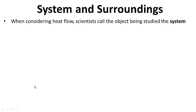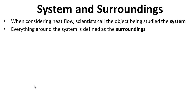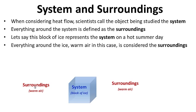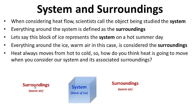System and surroundings. When considering heat flow, scientists call the object being studied the system, and everything around the system is defined as the surroundings. Let's say a block of ice represents the system on a hot summer day. Everything around the ice — the warm air — is considered the surroundings. Think about what's hot and what's cold. Remember, heat always moves from hot to cold. So how do you think heat is going to move when you consider our system and its surroundings?